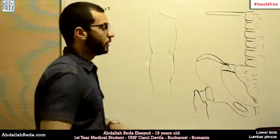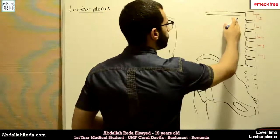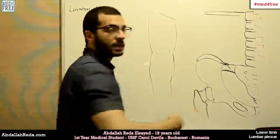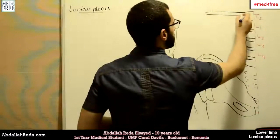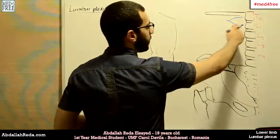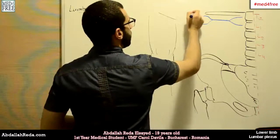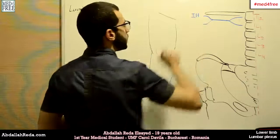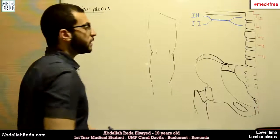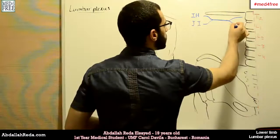We have a branch given from the ventral rami of T12, which is the last thoracic vertebra. It anastomoses with the upper division of the ventral rami of L1, and this gives us two branches: the iliohypogastric nerve and the ilioinguinal nerve.